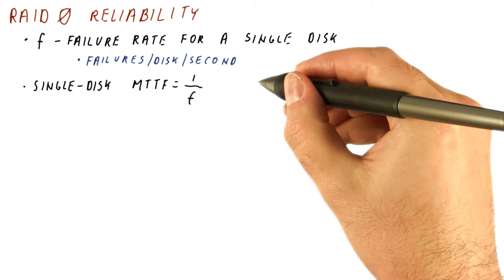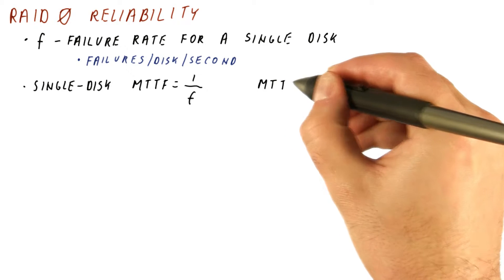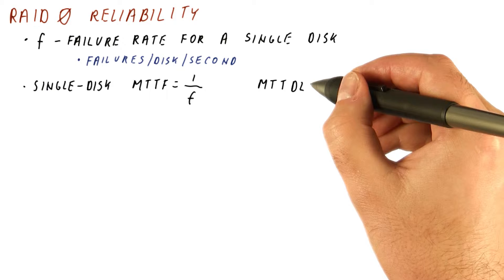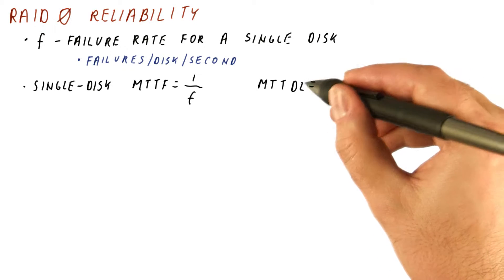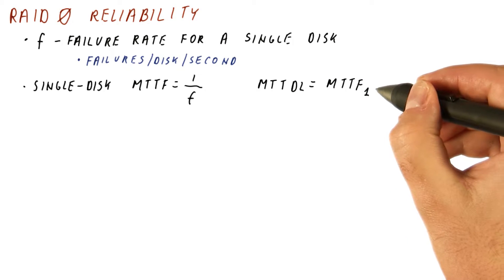For disks, the MTTF is also sometimes called mean time to data loss, or how long until we lose some data on this disk. And for a single disk, the mean time to data loss is the same as the MTTF of one disk.